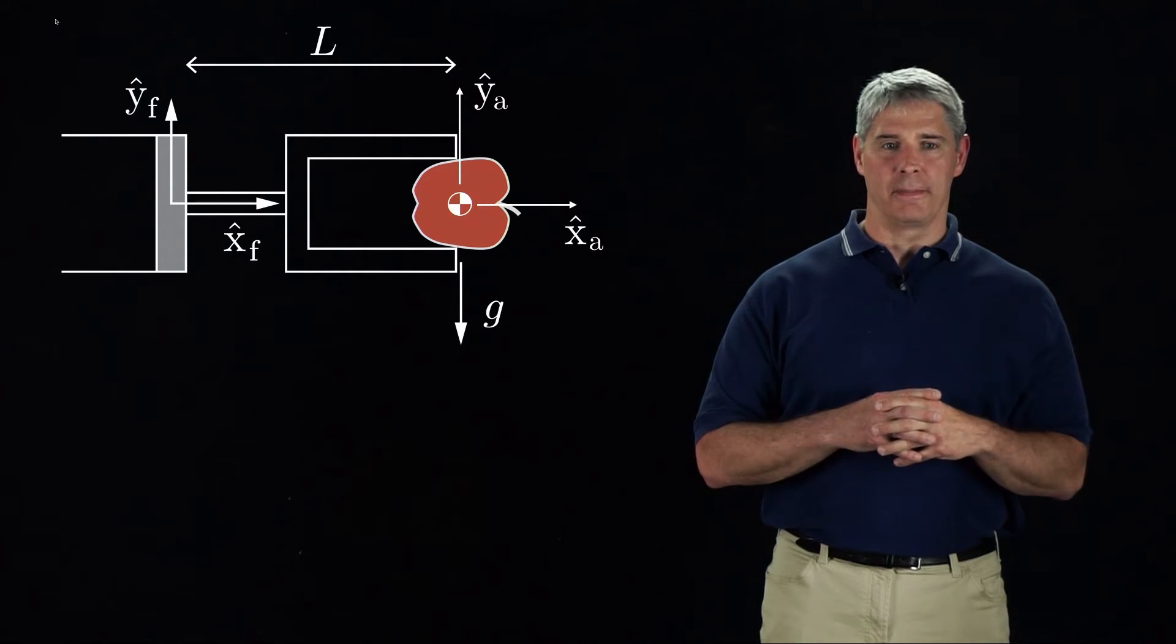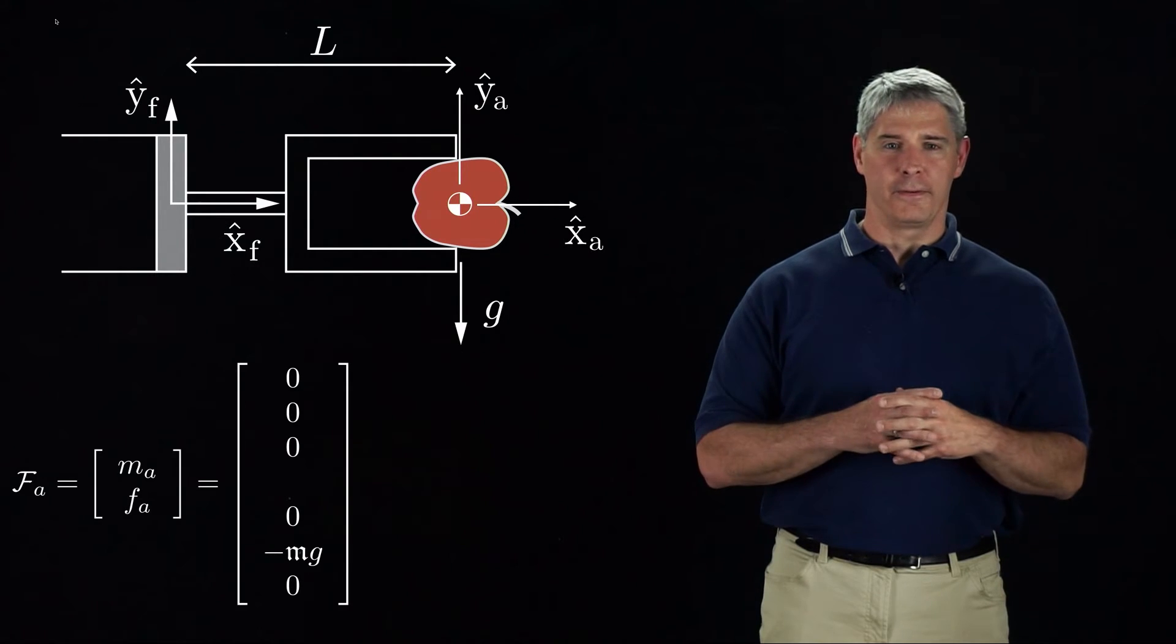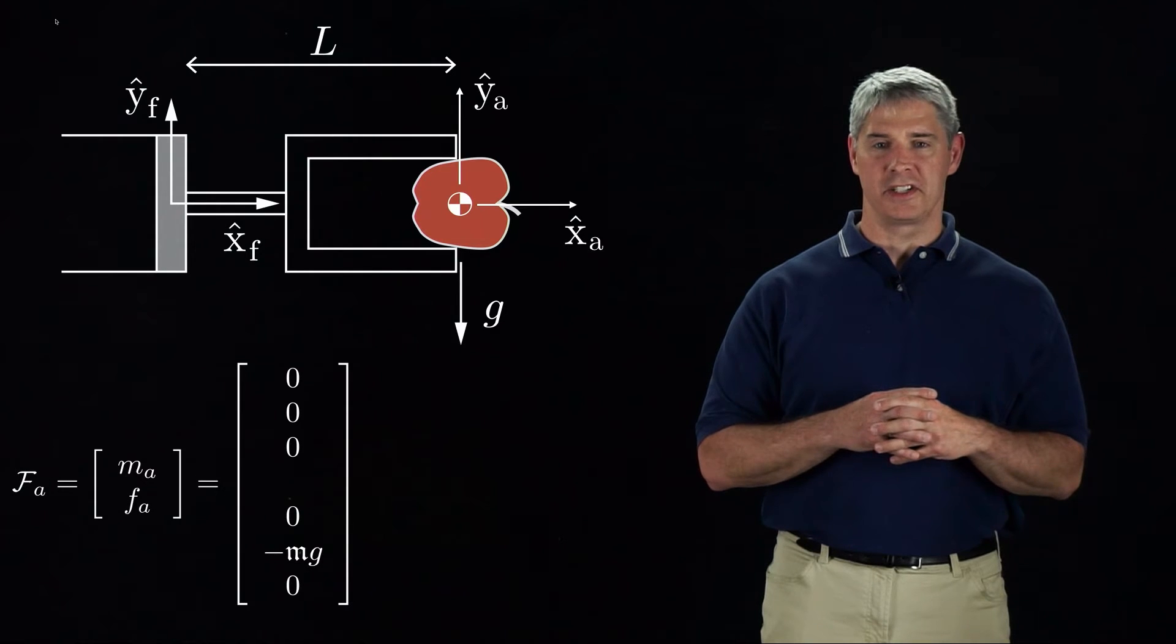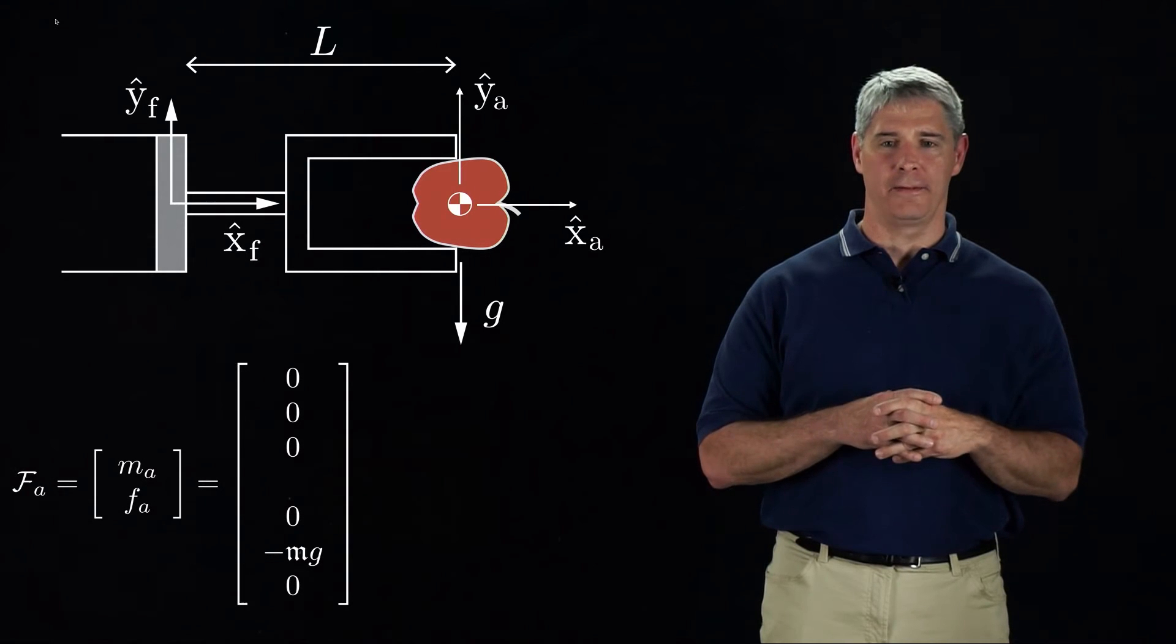Returning to our apple example, we can define a frame A at the center of mass of the apple. In this frame, the force due to gravity is Mg in the minus y direction, and the moment is zero since the force vector passes through the origin of the A frame.